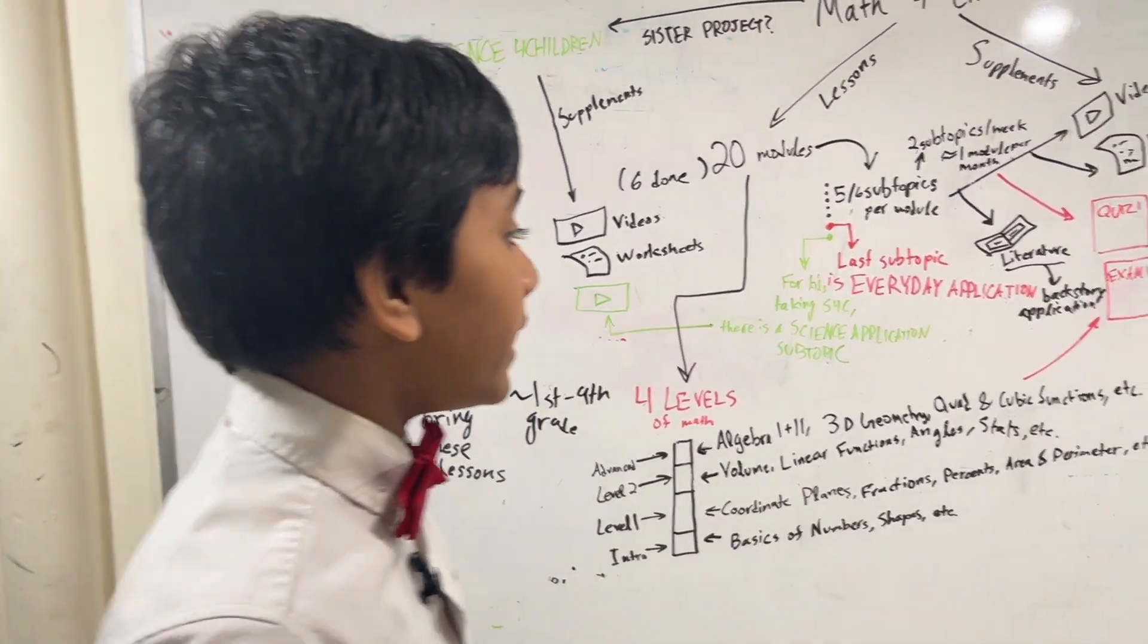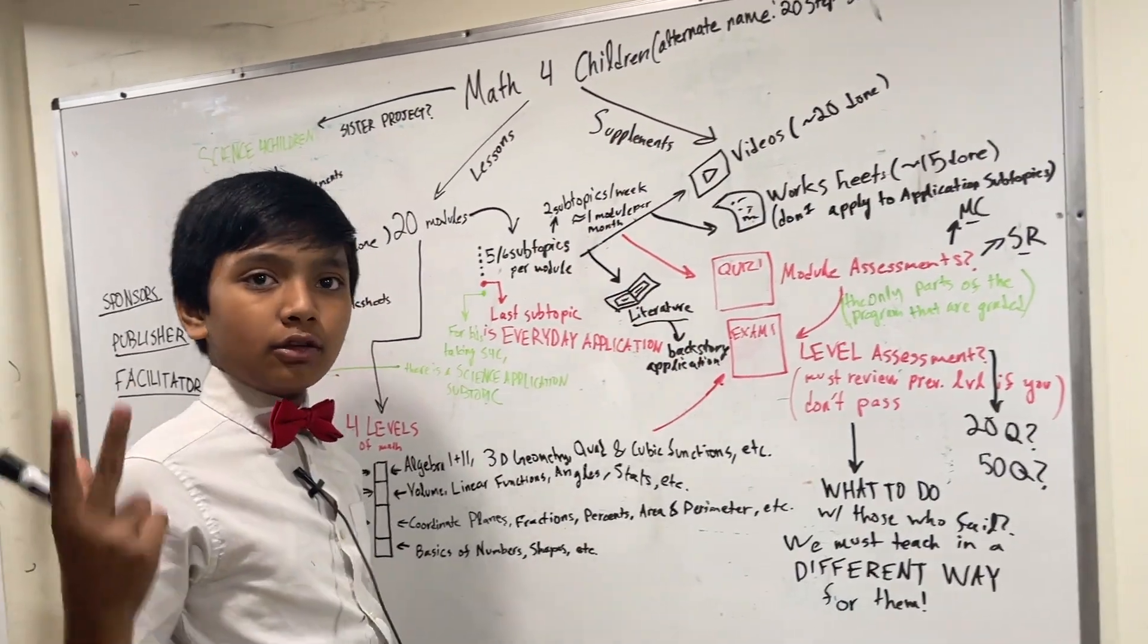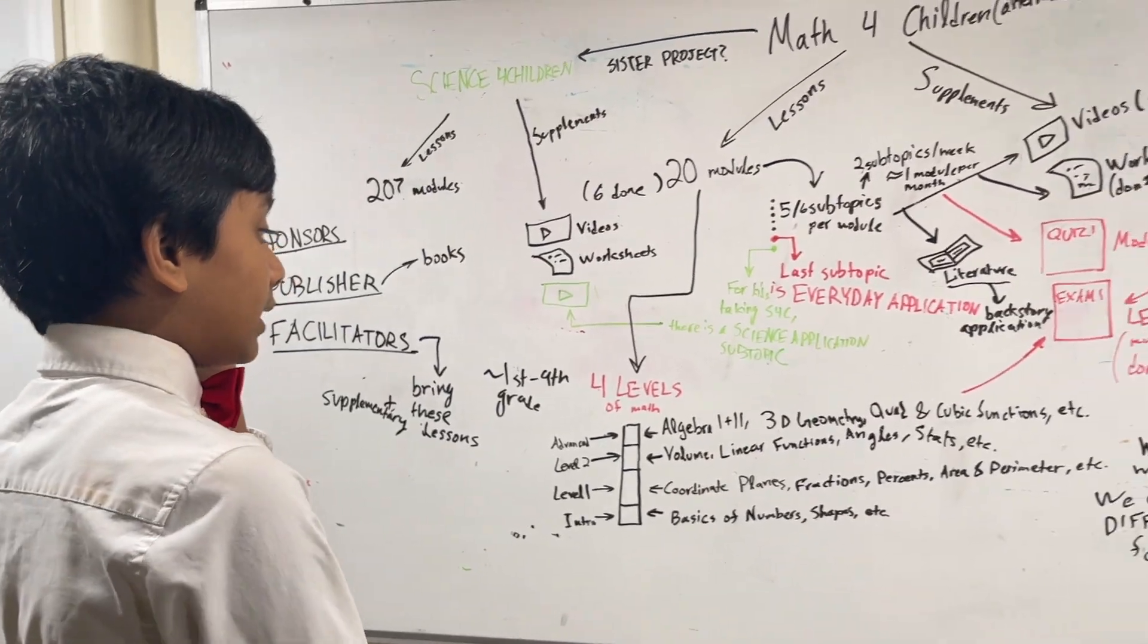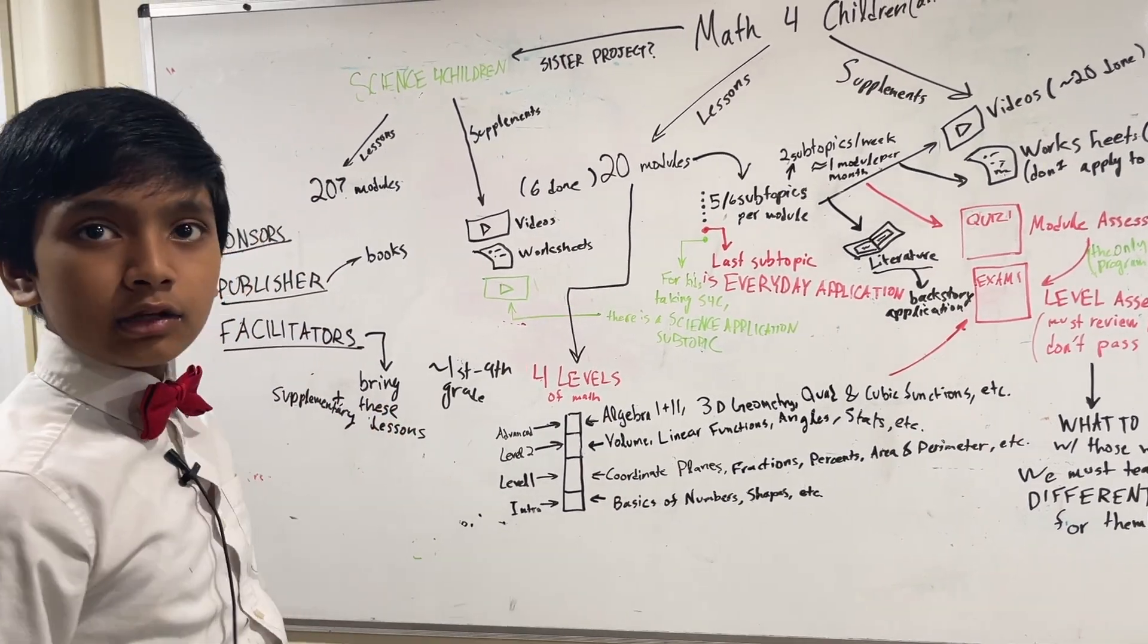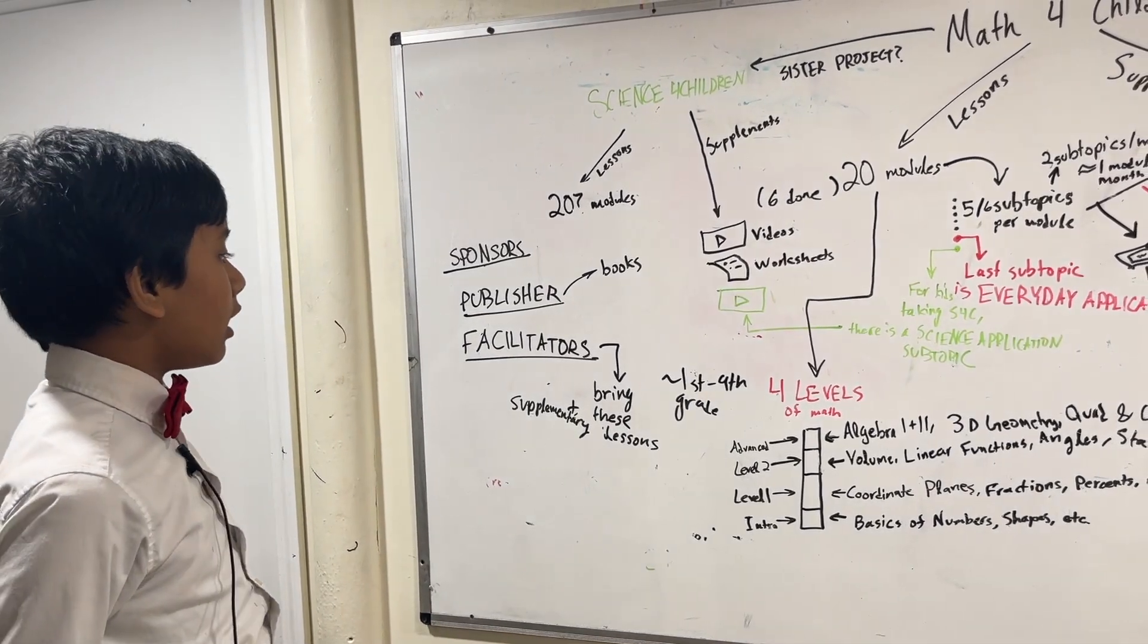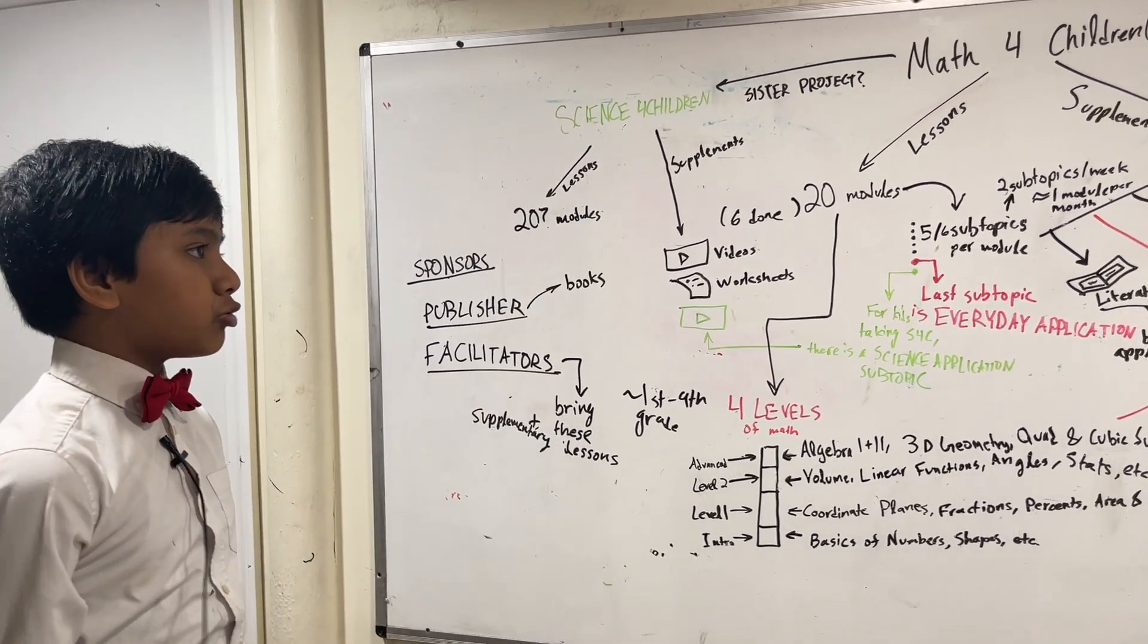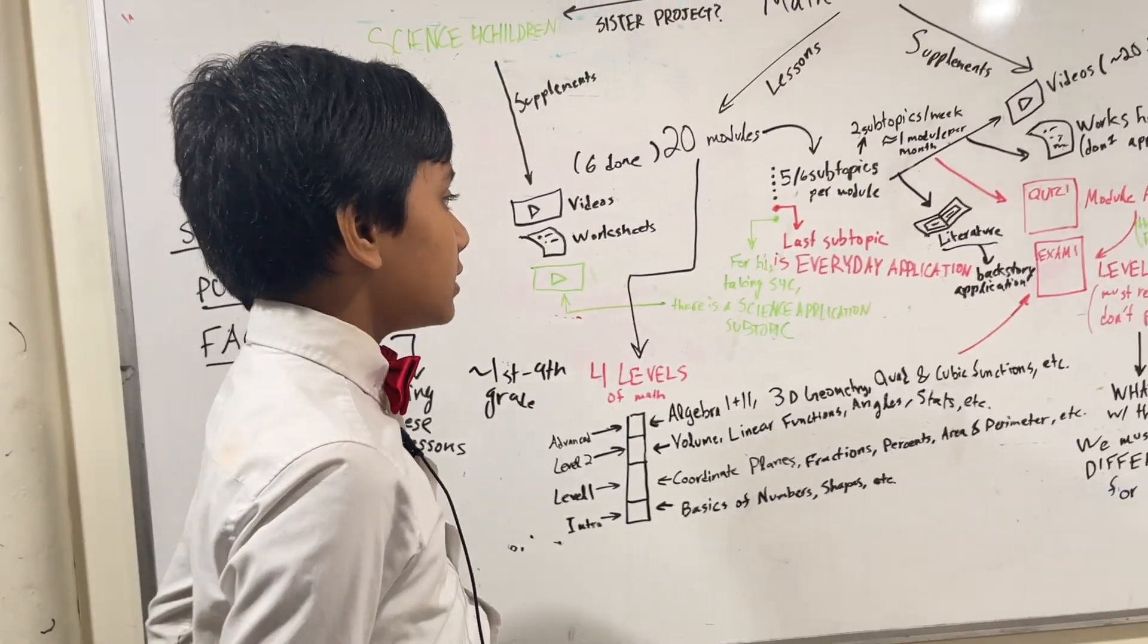Right now we're going to be working on doing those worksheets, finishing those videos, finishing the worksheets, and writing those assessments. Later, when we're finished with all that, we're going to be starting to categorize everything into those four levels and then starting to write those different guidebooks for each level. And then finally, we will get to the topic of having a publisher, having a sponsor, having a facilitator. We're just looking to get the project off the ground, finish all those 20 modules by six months time.